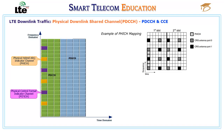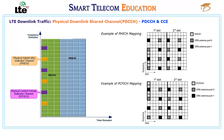The Physical Hybrid ARQ Indicator Channel (PHICH) carries the Hybrid ARQ Acknowledgement and Negative Acknowledgement messages for uplink transmission. PHICH is distributed in resource element groups across the whole bandwidth and is mapped on OFDM symbol 0 of the first slot in all downlink subframes. The Physical Control Format Indicator Channel (PCFICH) carries the Control Format Indicator (CFI), which informs about the number of OFDM symbols used for PDCCH in a subframe. PCFICH occupies 4 resource element groups, a total of 16 resource elements, independent of system bandwidth.